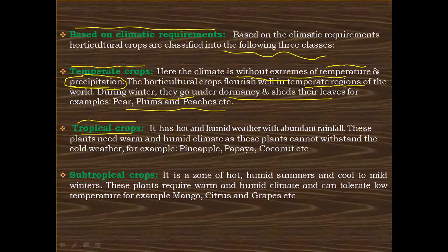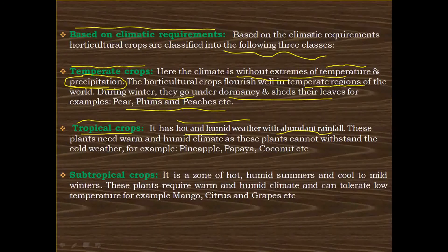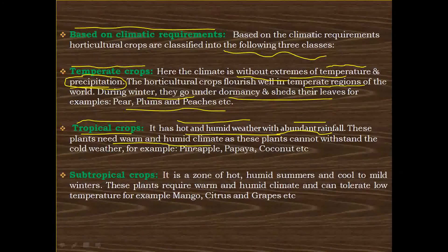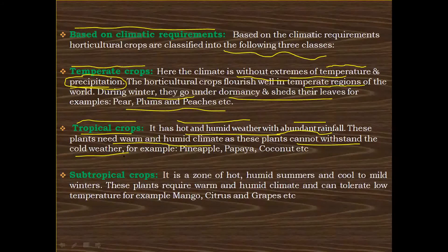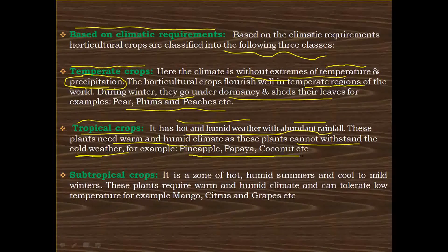The next class is tropical crops. The climate of the tropical region has hot and humid weather with abundant rainfall. The weather is very hot, humidity is high, and rainfall is very abundant. These plants need a warm and humid climate and cannot withstand cold weather. For example, pineapple, papaya, and coconut.